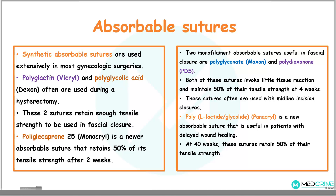These sutures are often used in midline incision closures, for example abdominal hysterectomies. And panacryl is a newer absorbable suture used for patients with delayed wound healing. At 40 weeks, this suture retains 50% of its tensile strength.